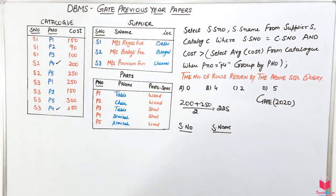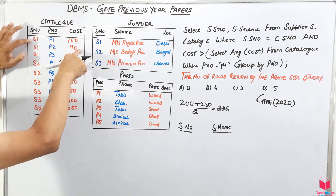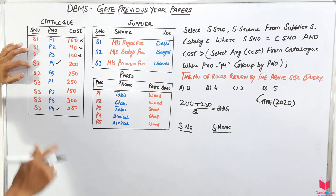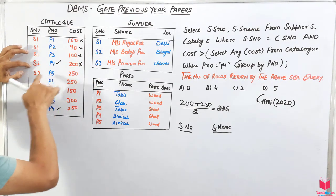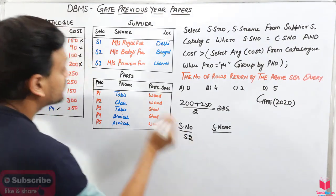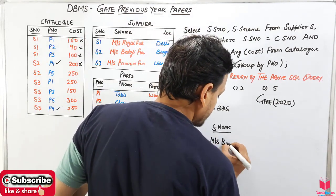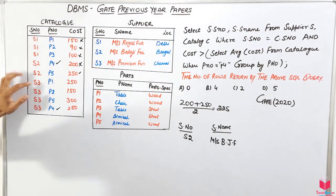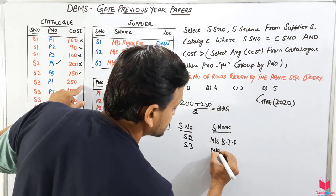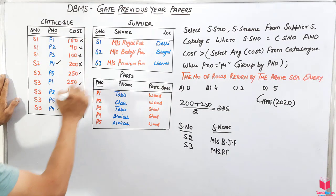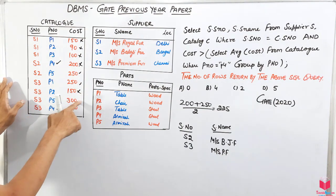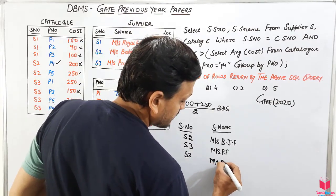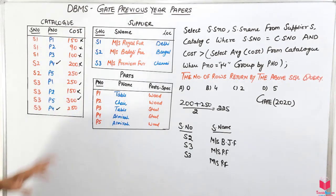Evaluating row by row: s1 has cost 150 — not above 225, so it is skipped. s2 with cost 200 is skipped, but s2 with cost 250 is above 225, so s2 (Ms. Balaji) is included. s3 with cost 250 is included (Premium Furniture). s3 with cost 150 is skipped, but s3 with cost 300 is included — that is Premium Furniture again. s4 with cost 250 is also above 225, so s4 is included. This gives four rows in total.